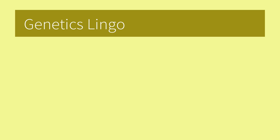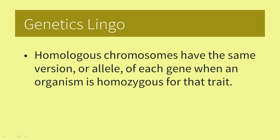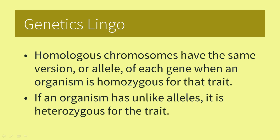Let's talk about Mendel's results using current genetics terminology. Mendel did not know about chromosomes and the genes they contained, so he used a different vocabulary. We know from cell division that sexually reproducing organisms have chromosomes in pairs — one from the male parent and one from the female parent. These are the homologous chromosomes and have the same version or allele of each gene when an organism is homozygous for that trait. If an organism has unlike alleles, it is heterozygous for the trait.